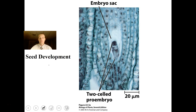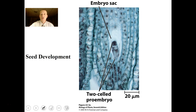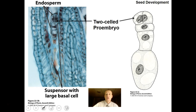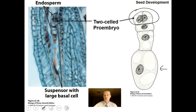This shows how seeds develop. The fertilized gametophyte now has a little embryo — a two-celled pro-embryo that's forming and will get bigger over time. A little later in development you can see the pro-embryo growing, still attached to the parent plant.